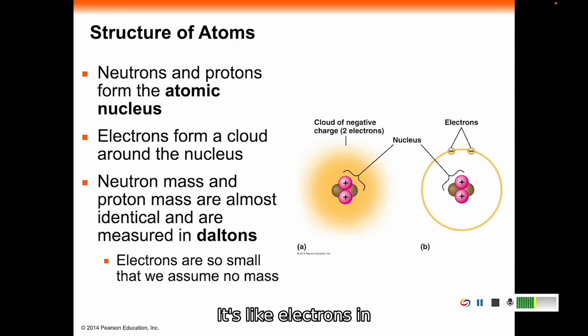Electrons in an atom are like the size of a house fly flying around a football stadium. In this picture they look fairly large, but in reality it's about the ratio of a house fly if the entire football stadium was one atom.